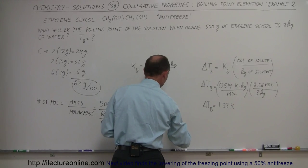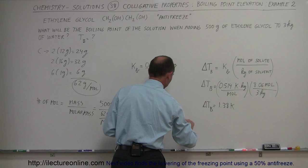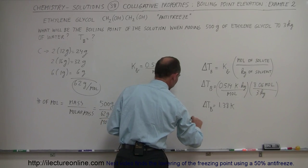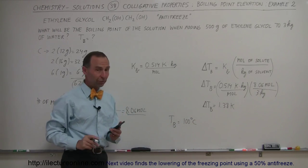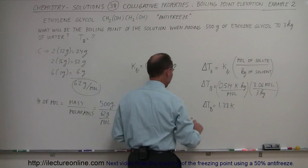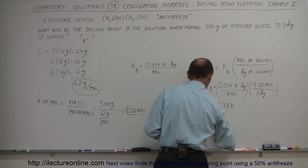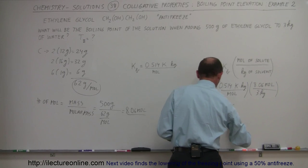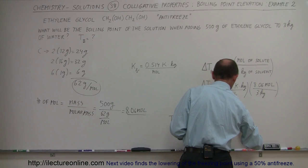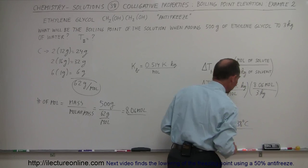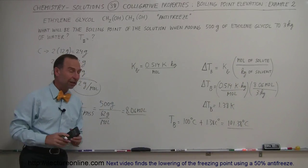So that means that the new boiling point is equal to the original 100 degrees centigrade for pure water, plus the delta, which would be 1.38 centigrade degrees, which is a total of 101.38 degrees centigrade. So that would be the new boiling point of that solution.